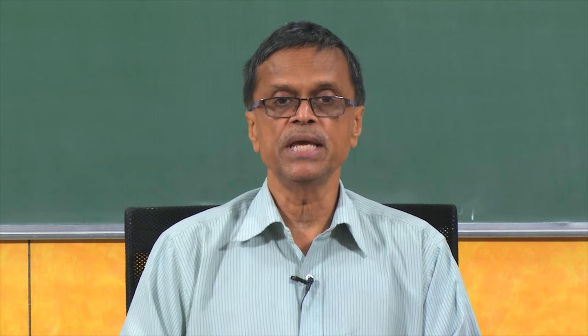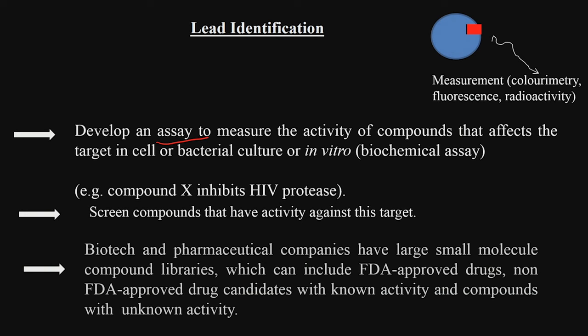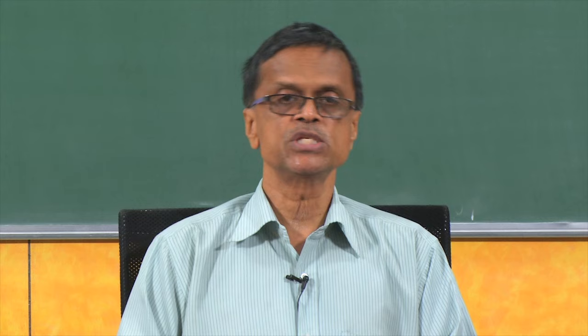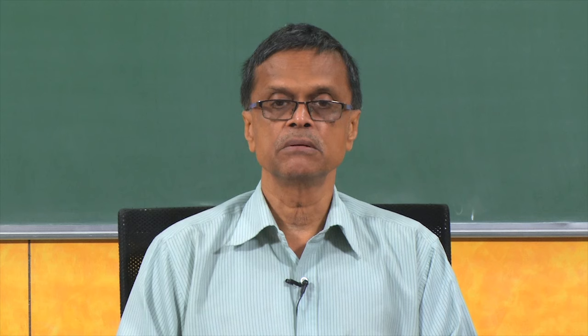These are called screening — you screen compounds that have activity against a particular target. Biotech and pharmaceutical companies will have large small molecule libraries containing FDA-approved drugs and non-FDA-approved drug candidates. They quickly screen all of them in the lab using an in vitro approach to see which ones look very promising — that is lead identification.